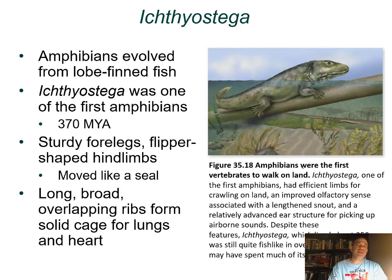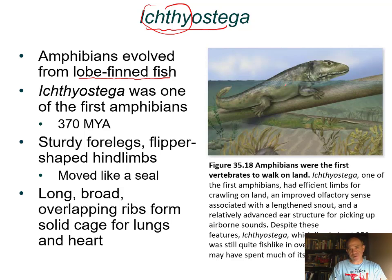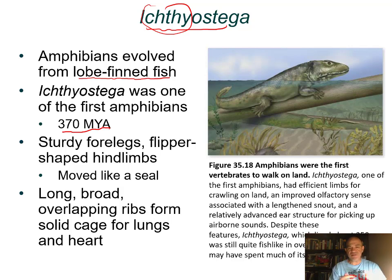Here we see a drawing of the fossil Ichthyostega—even in the name, 'ichthyo' means fish. However, this is one of the first amphibians. Amphibians probably evolved from a common ancestor with lobe-finned fish—the Sarcopterygii, like the coelacanth and lungfishes, likely share a common ancestor with amphibians. Ichthyostega was found in rocks 370 million years ago, giving us a set-point date for when some of the first terrestrial vertebrates appeared.